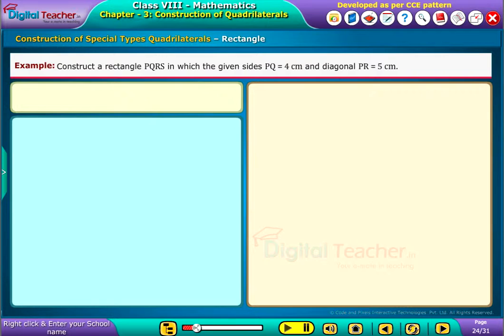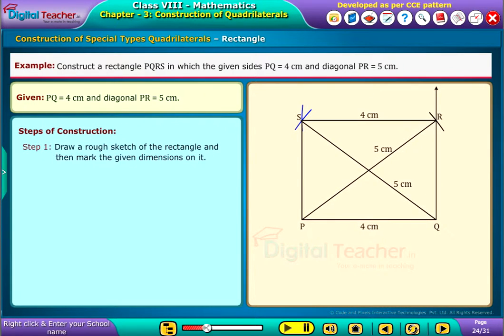Given: PQ equals 4 centimeters and diagonal PR equals 5 centimeters. The steps of construction are as follows. Step 1: Draw a rough sketch of the rectangle and then mark the given dimensions on it.